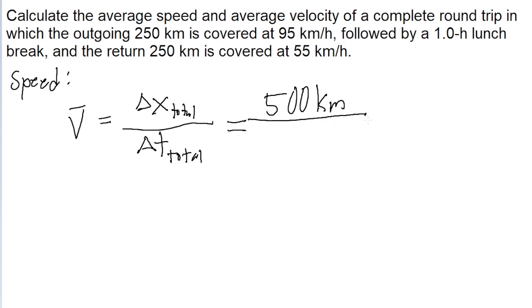The total time elapsed is where things get a little bit more involved, because there are three different parts to consider. First, the time it takes for the outgoing trip, then the one-hour lunch break, and then the time it takes for the return trip.